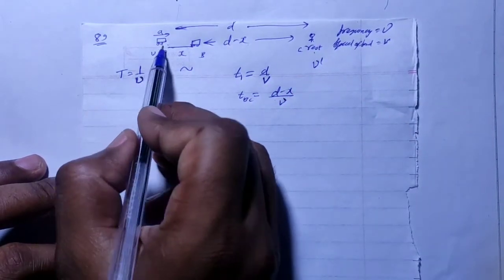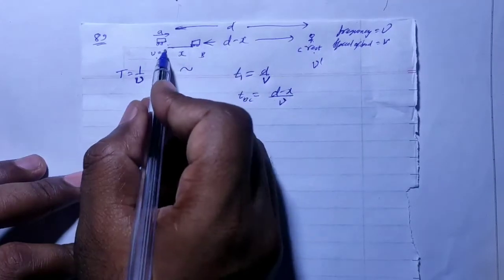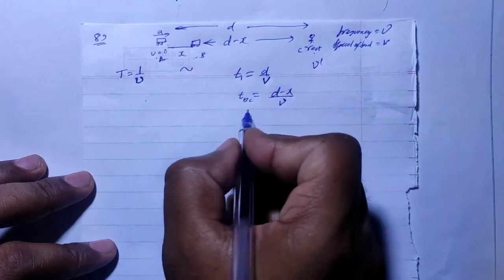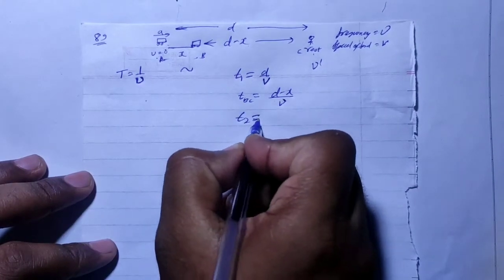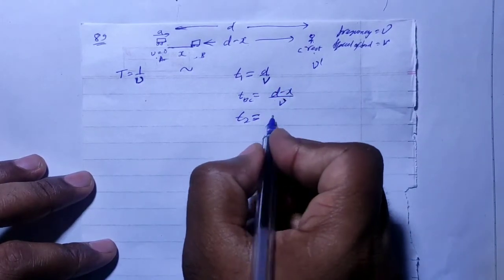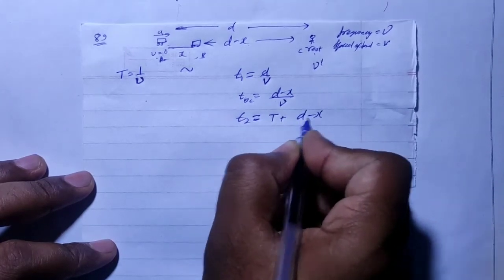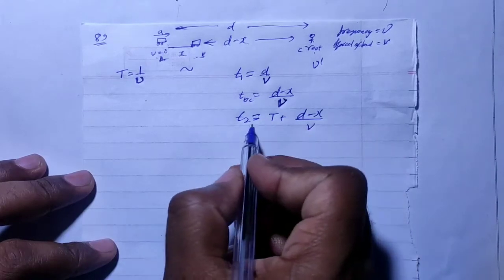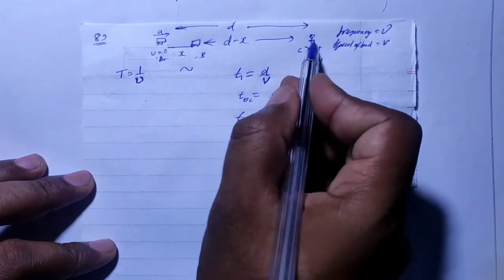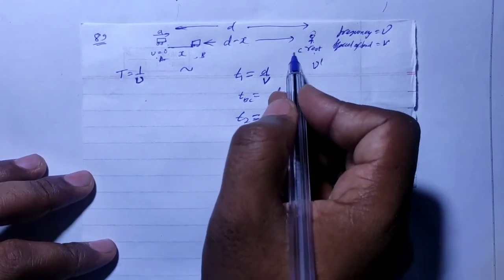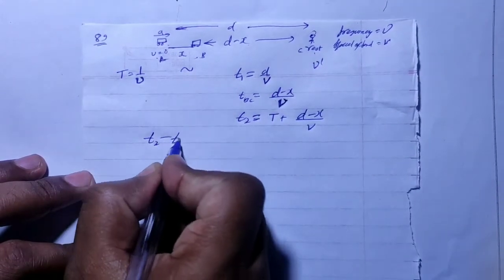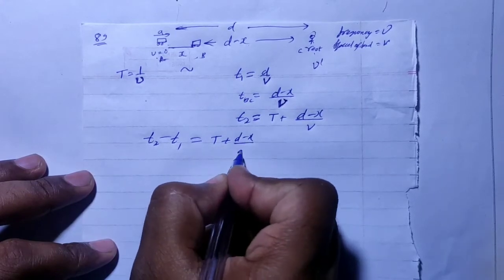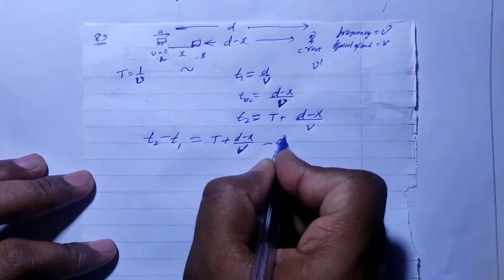The time for the first pulse to reach the observer is t1 = d/v. The total time t2 for the second pulse to be received by the observer is capital T plus (d minus x) divided by v — that is, t2 = T + (d − x)/v. Now, the time difference between two consecutive pulses equals the time period: t2 minus t1.